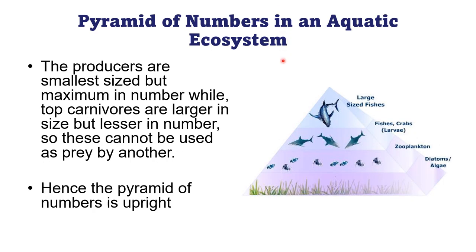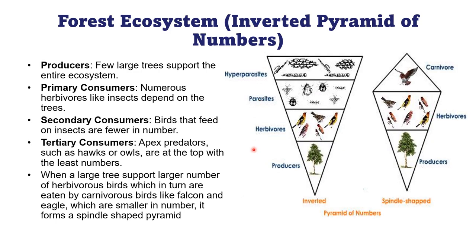In the aquatic ecosystem — in a pond, river, or lake — producers have a small size but are large in number compared to herbivores. When we talk about numbers, producers are very minute but their number compared to herbivores is very high. So in the aquatic ecosystem, the pyramid of numbers is also upright.